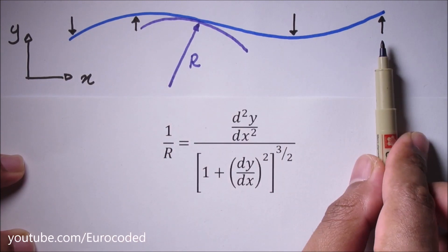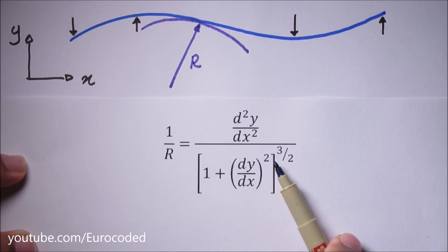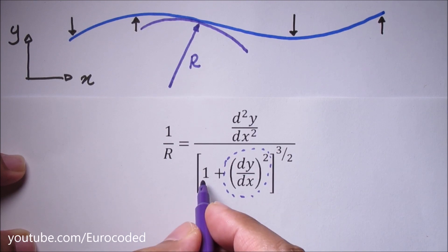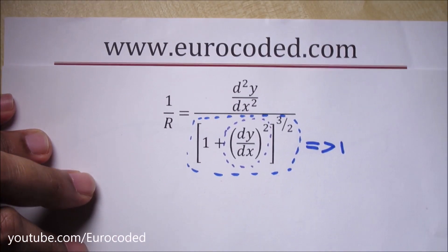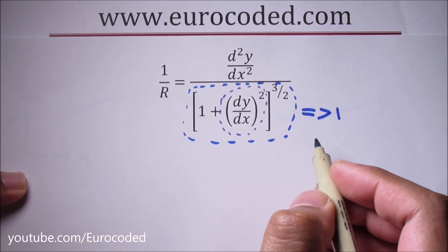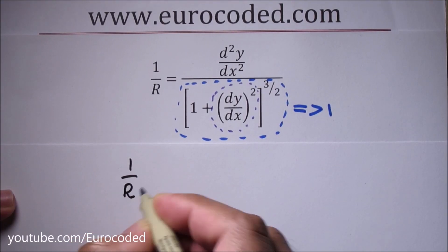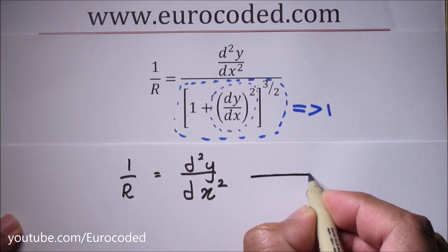In the case of elastic curve of the beam, the slope noted by dy over dx is very small and the square of the slope which is this expression here is negligible when compared with unity. Therefore, without losing the accuracy of this expression, we can simplify this equation and write 1 over R is equal to d squared y over dx squared. Let's call this equation 1.